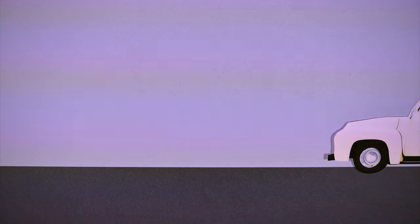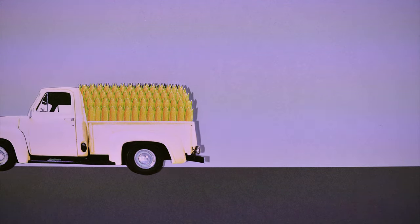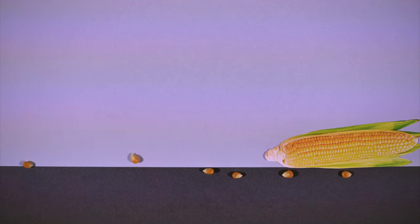A million kernels of corn is about 1,250 ears. So one kernel in that truckload would be one part per million.